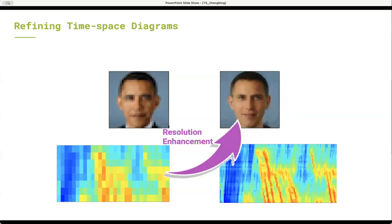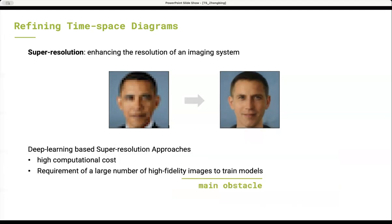Here, the refinement of a time-space diagram is all about enhancing image resolution. In computer science, it's referred to as super-resolution, which is an active field, particularly with the development of deep learning approaches like CNN.